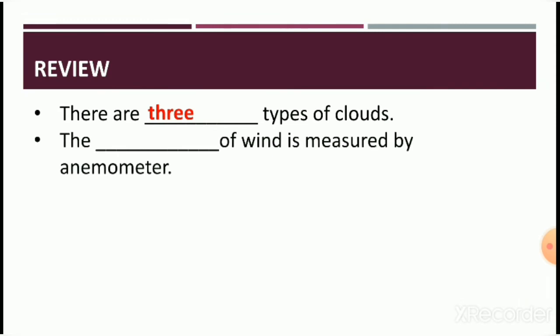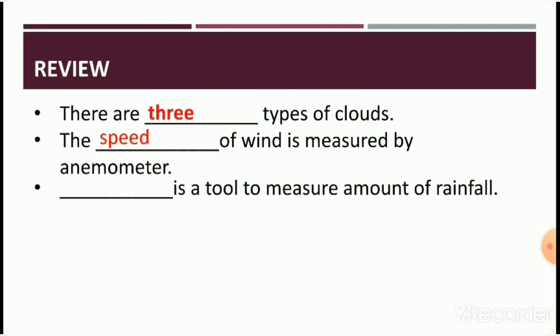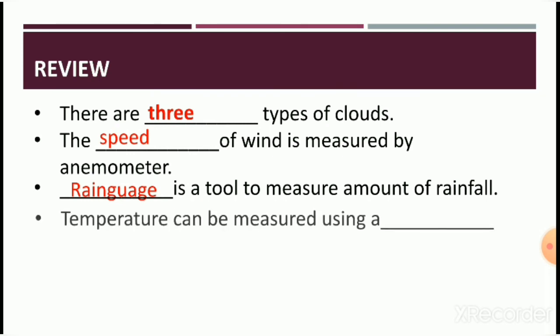Next, the dash of wind is measured using an anemometer. As I discussed, the wind vane is the tool to measure the direction of the wind, whereas the anemometer is used for measuring the speed of the wind. Next, dash is a tool to measure the amount of rainfall — that is called the rain gauge. Temperature can be measured using a dash — yes, that is a thermometer.